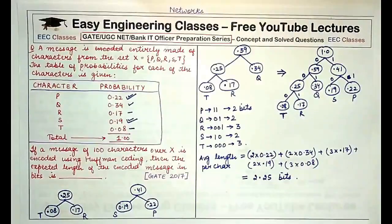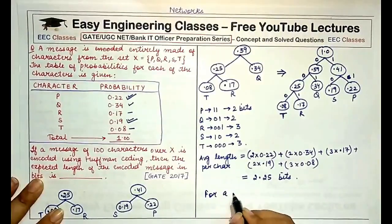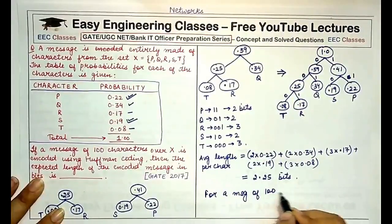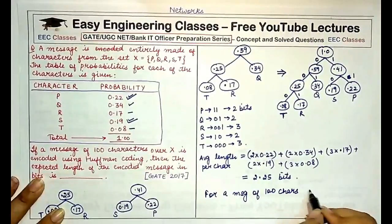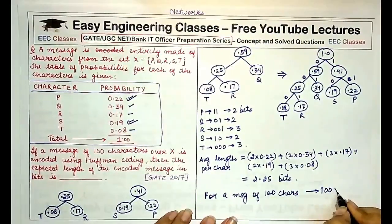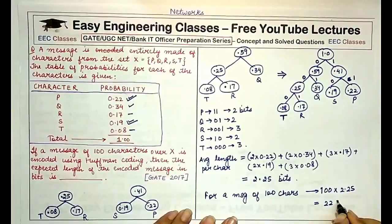That is, on average each character has been assigned 2.25 bits. And for a message of 100 characters, as it is given in the question, how many bits would you require? 100 into 2.25, which is 225 bits.